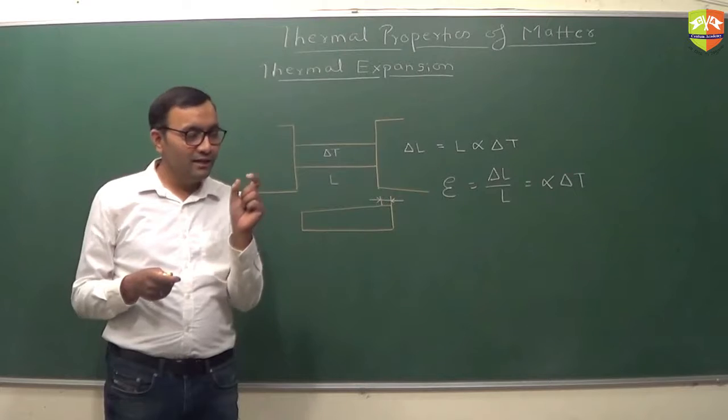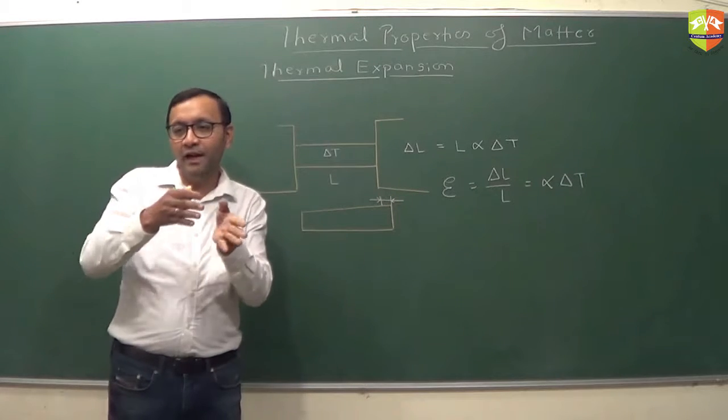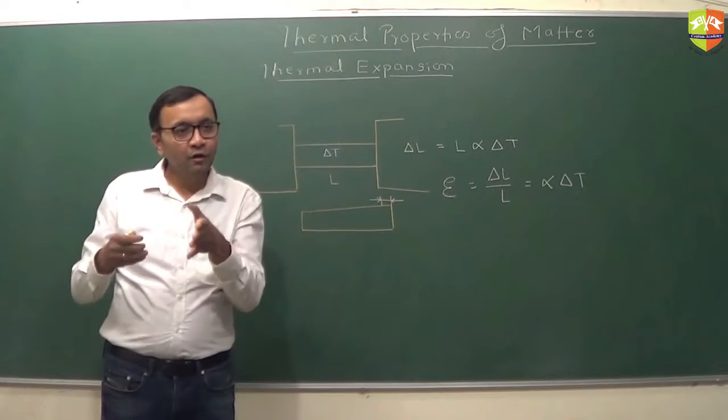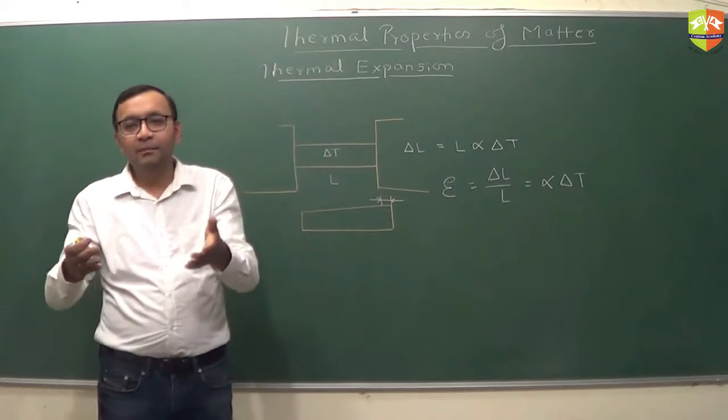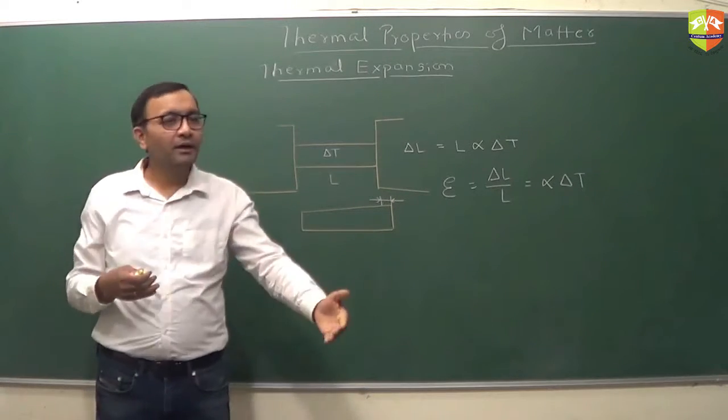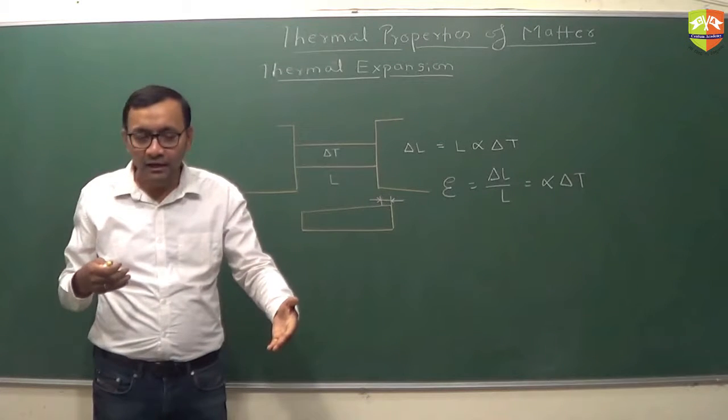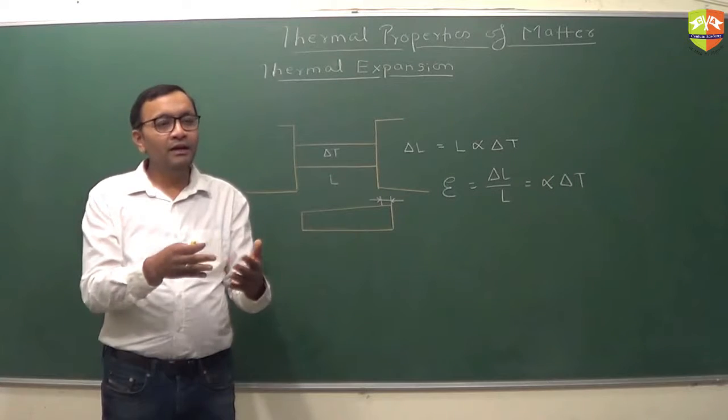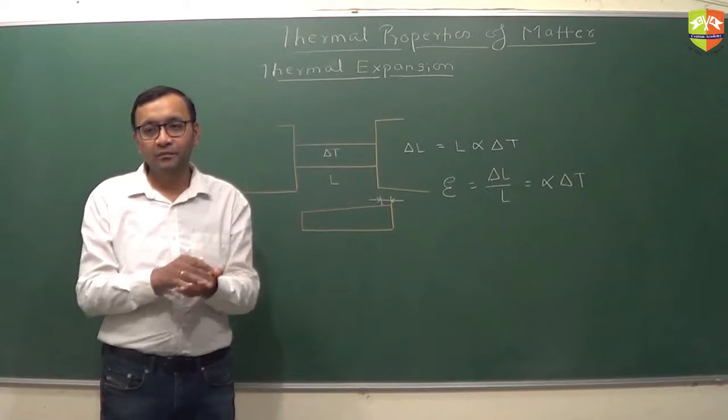That is the reason why you will see that there is a small gap in the railway tracks, those rails. There is a provision for it to expand. If its temperature increases, it will expand a little bit. But if you don't allow it to expand, it will become a curve sort of thing and it will anyway change its length.